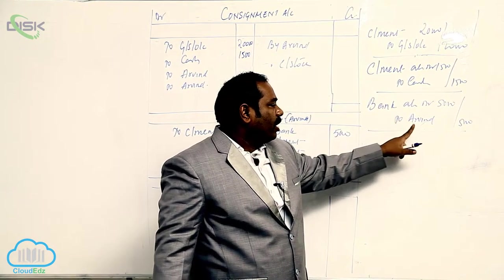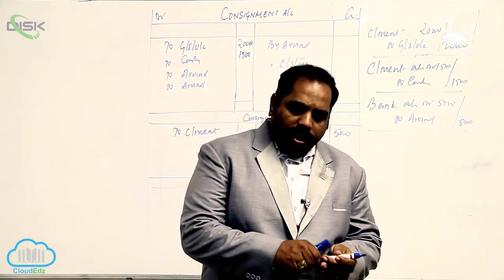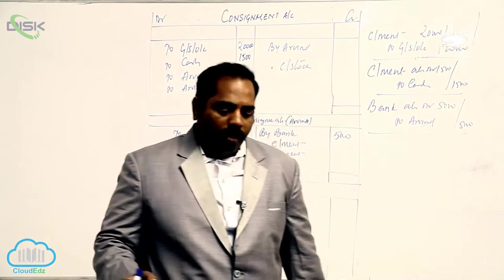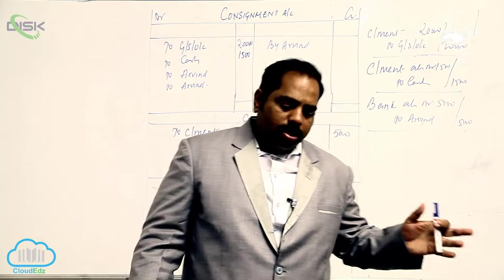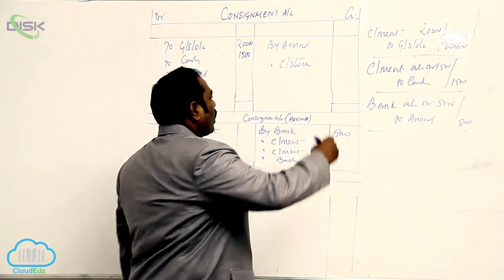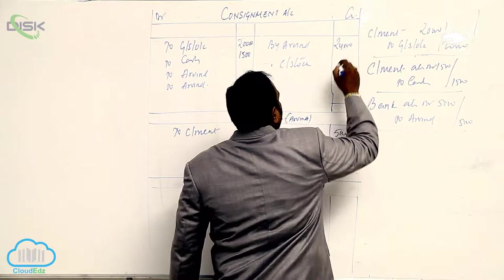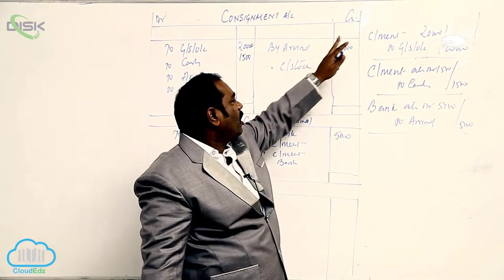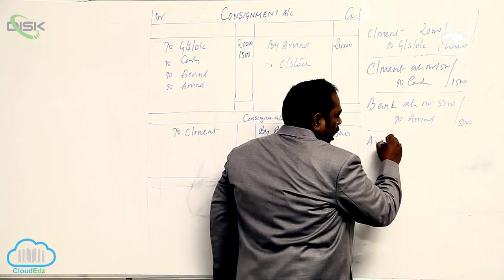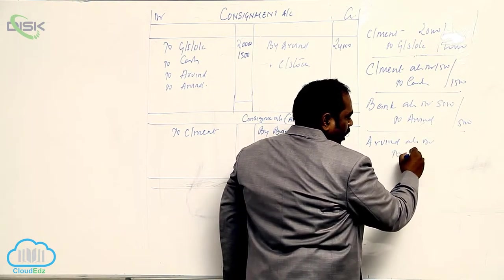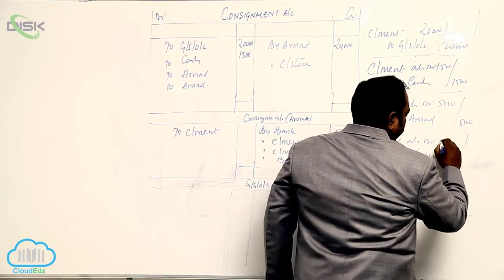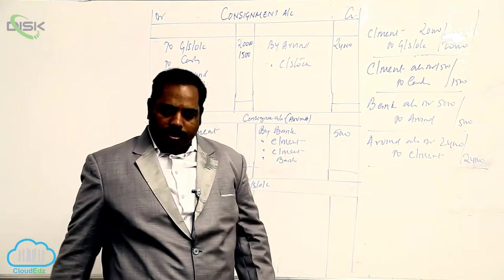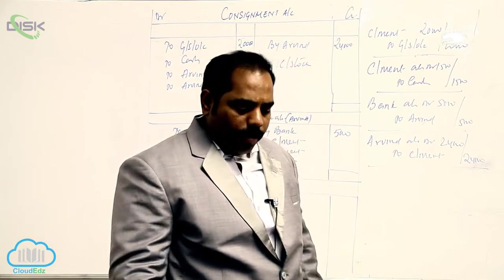Arvind sent an account sales showing that half of the goods were sold for 24,000, of which 4,000 was sold on credit. Total sales come to 24,000. The entry is: Consignee Account debit, to Consignment Account — debit Arvind, credit Consignment — for 24,000.